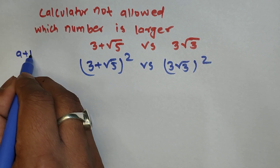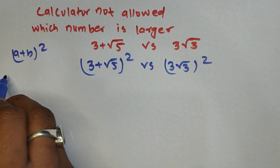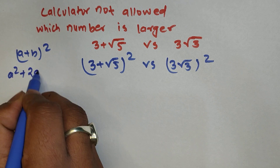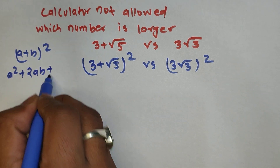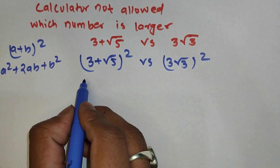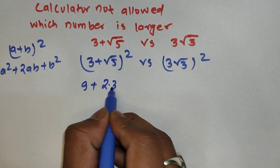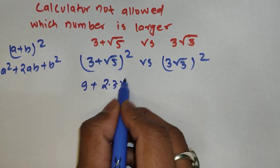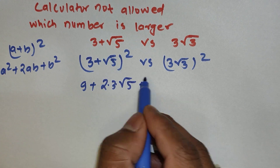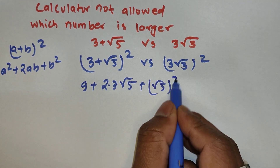The formula for (a + b)² is a² + 2ab + b². Applying this to the left side: 3² is 9, plus 2 times 3 times √5, plus (√5)².